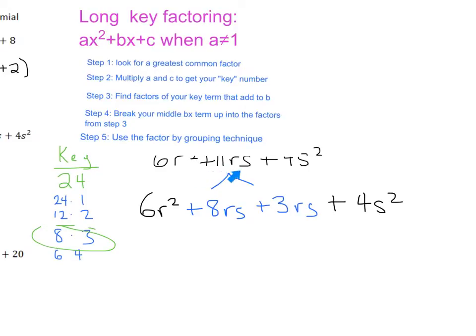So again, you see, we broke this 11 up into 8 plus 3. And step five is to use the factor by grouping technique. So we group these first two terms together, group these second terms together. And what can we take out of our first two terms, 6 and 8? We know that we can take out a 2. And then take a look at the variables. You can see that we have an R² and an RS. So they both are going to have an R in common.